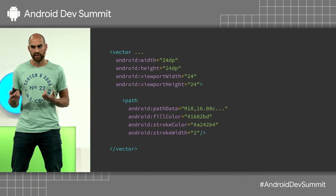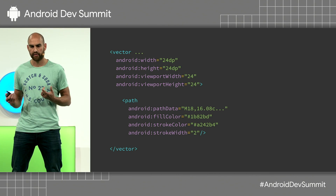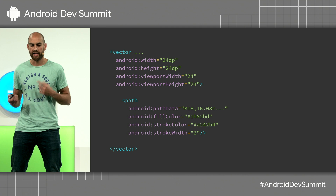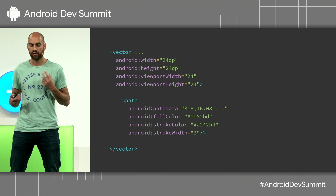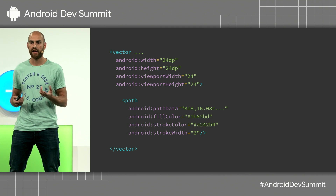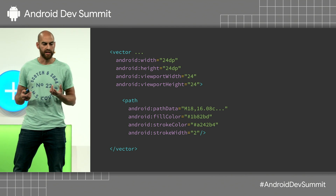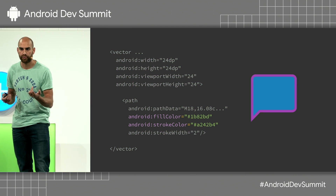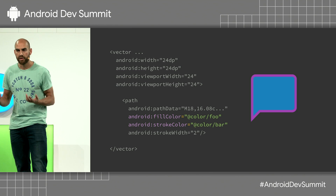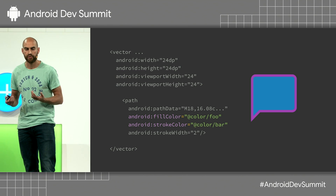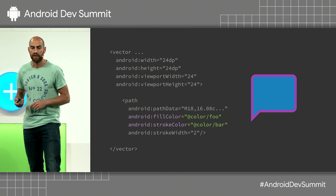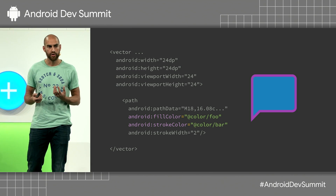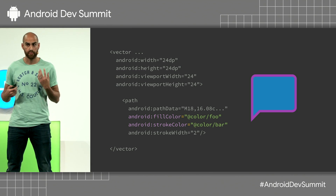Most vectors in your app probably look something like this. They have some paths, and they're probably hard-coding a color, something like this fill or stroke here. Maybe you're using a color resource like this. But there's actually a lot more you can do here, which I want to talk about.